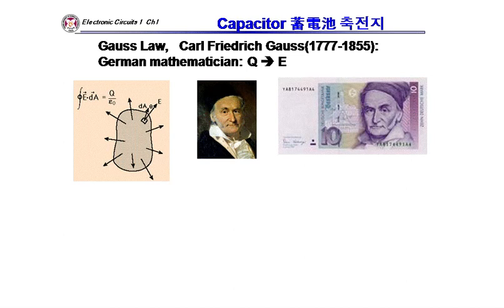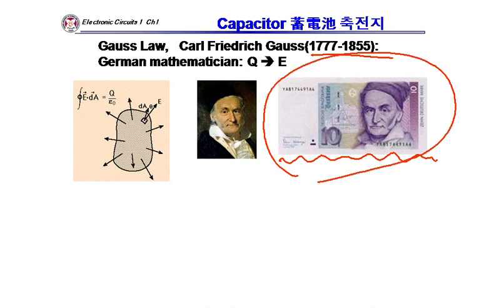Gauss lived in the 19th century. He was so famous he became the model on German money. He was both a mathematician and a physicist, and he derived that electric field is generated by charge — Gauss's law.